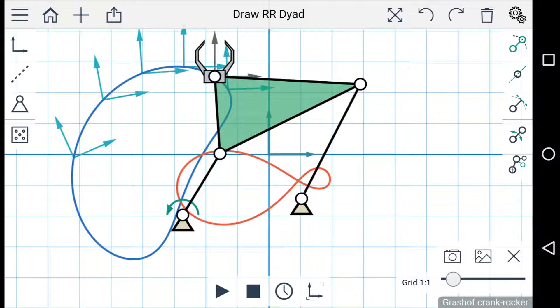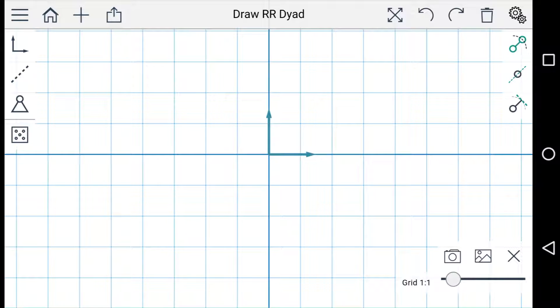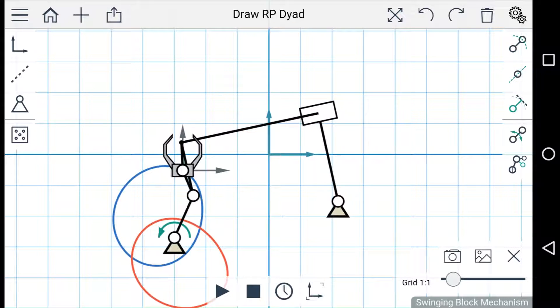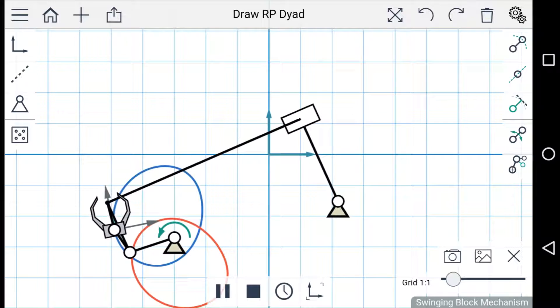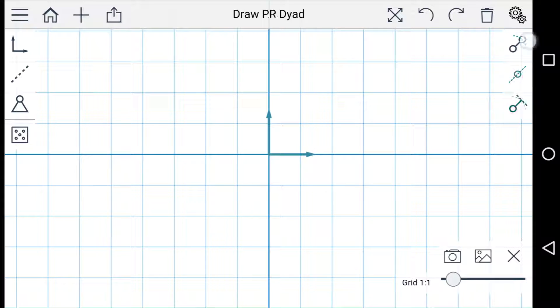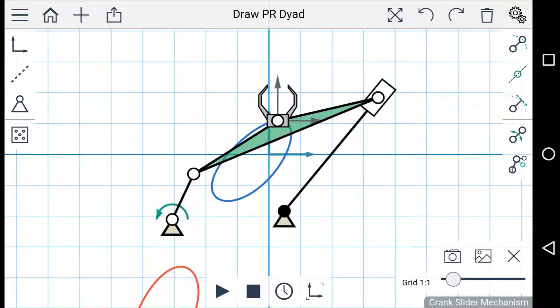Let's delete this linkage by pressing the delete button at the top. You can create different types of linkages with different dyads. So using an RR dyad and an RP dyad, you can create an RRPR linkage. Or using an RR dyad and a PR dyad, you can create a crank slider.